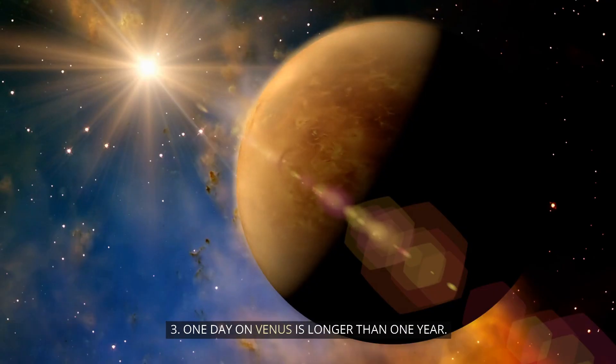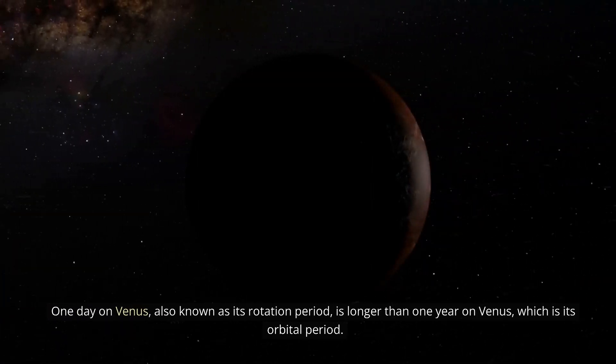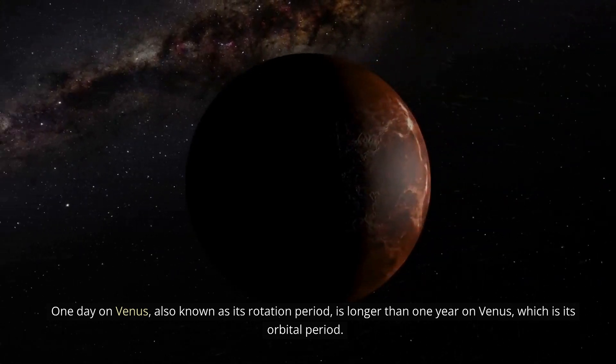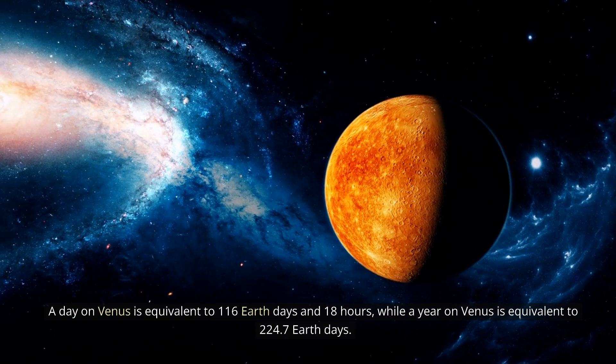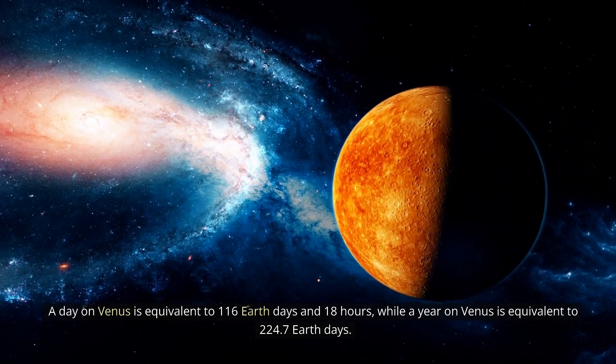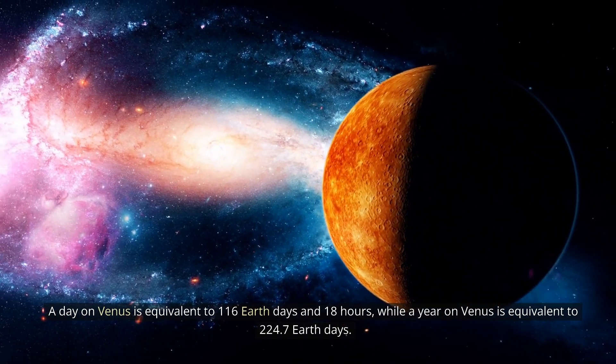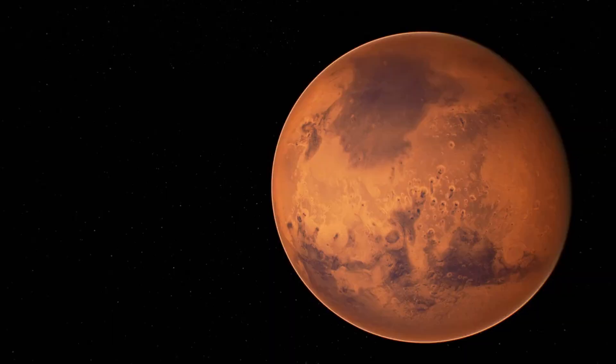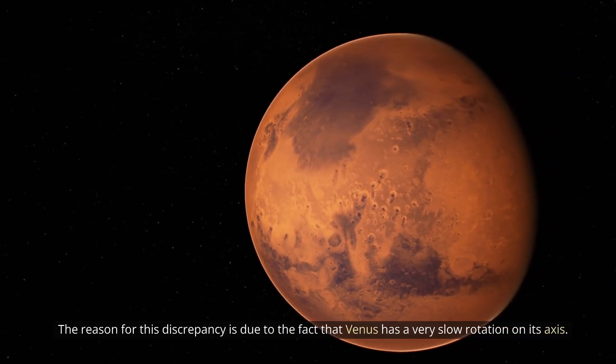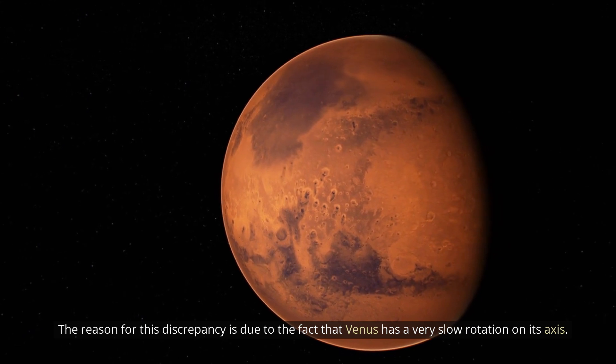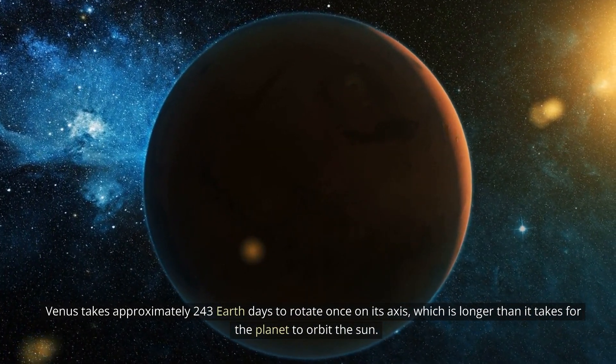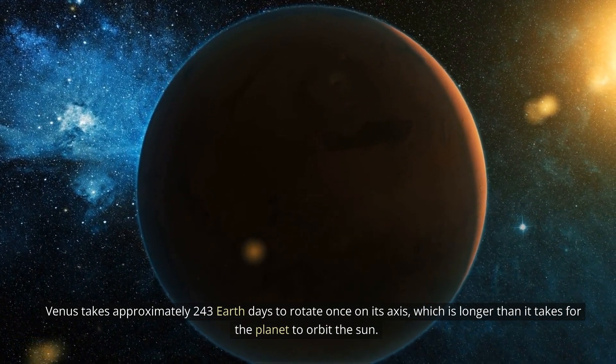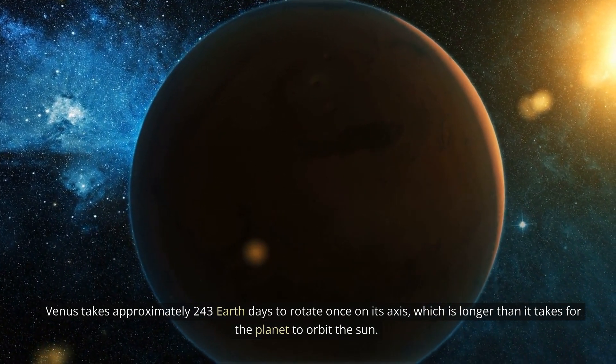3. One day on Venus is longer than one year. One day on Venus, also known as its rotation period, is longer than one year on Venus, which is its orbital period. A day on Venus is equivalent to 116 Earth days and 18 hours, while a year on Venus is equivalent to 224.7 Earth days. The reason for this discrepancy is due to the fact that Venus has a very slow rotation on its axis. Venus takes approximately 243 Earth days to rotate once on its axis, which is longer than it takes for the planet to orbit the Sun.